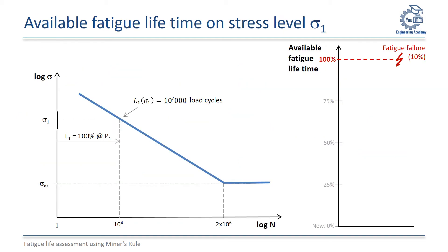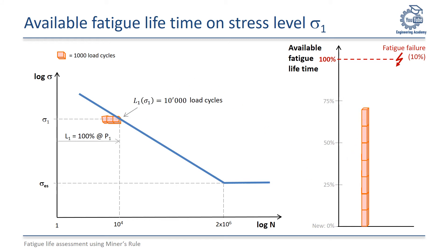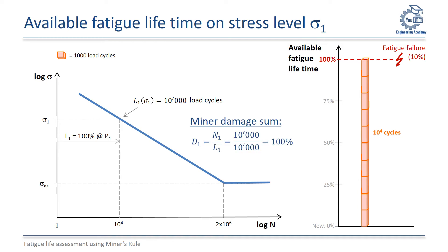Let us consider a part loaded by a stress sigma1, significantly higher than sigma ES. The stress level sigma1 is the load at which the service lifetime is 10,000 load cycles, represented here by 10 orange boxes. The first 1,000 load cycles cause 10% of the available lifetime damage to be used up, and every further 1,000 cycles adds another 10%, until 100% damage has accumulated after 10,000 cycles. The minor damage sum D1 is the number of load cycles N1 divided by the possible load cycles L1 — in this example, 10,000 divided by 10,000, which equals a minor damage D1 of 100%.